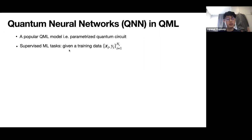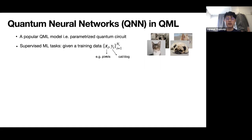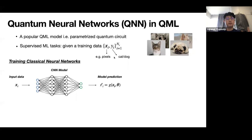In supervised learning, we are given training data X_i with true labels Y_i. You can think of X_i as pixels in a picture and Y_i as labels like cat or dog for classification. To remind you how classical neural networks work: you have input data, a classical neural network model, and at the end a model prediction as output. You go through this process for all your training data and calculate a loss function — you can choose mean square error or negative log-likelihood — giving you a loss function landscape you want to navigate to find the optimal point.